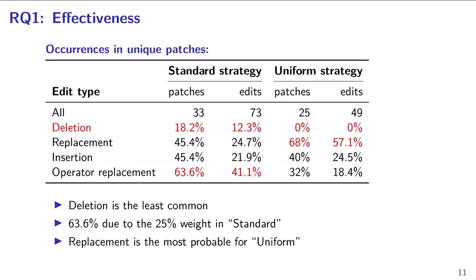We show the composition of patches found by the two strategies. Deletions are by far the least common edit — even in the standard strategy where they are overrepresented, deletions compose only 12% of the 73 edits. More surprisingly, in the uniform strategy, none of the 49 edits are deletions. The very high percentage of operator replacements in the standard strategy is explained by the size of its edit space, which is even smaller than deletions, making it even more overrepresented. When uniformly sampling edits, replacement rather than deletion is the more common edit type.